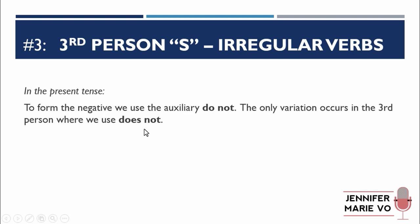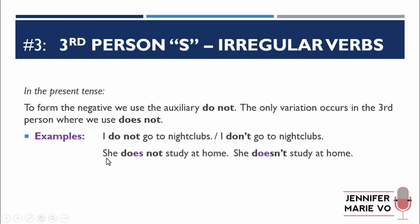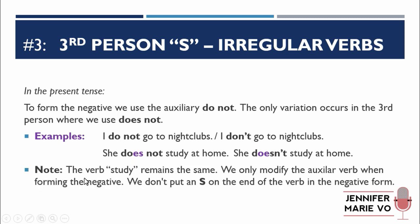Also important: to form the negative in the present tense, we use the auxiliary "do not." The only variation is in the third person, where we use "does not" — and "does" has ES. For example: "I do not go to nightclubs" / "I don't go to nightclubs." But if it's she, he, or it: "She does not study at home" / "She doesn't study at home" — not "she do." Also note the verb "study" remains the same — we only modify the auxiliary verb in the negative. You don't say "she does not studies," just "she does not study."